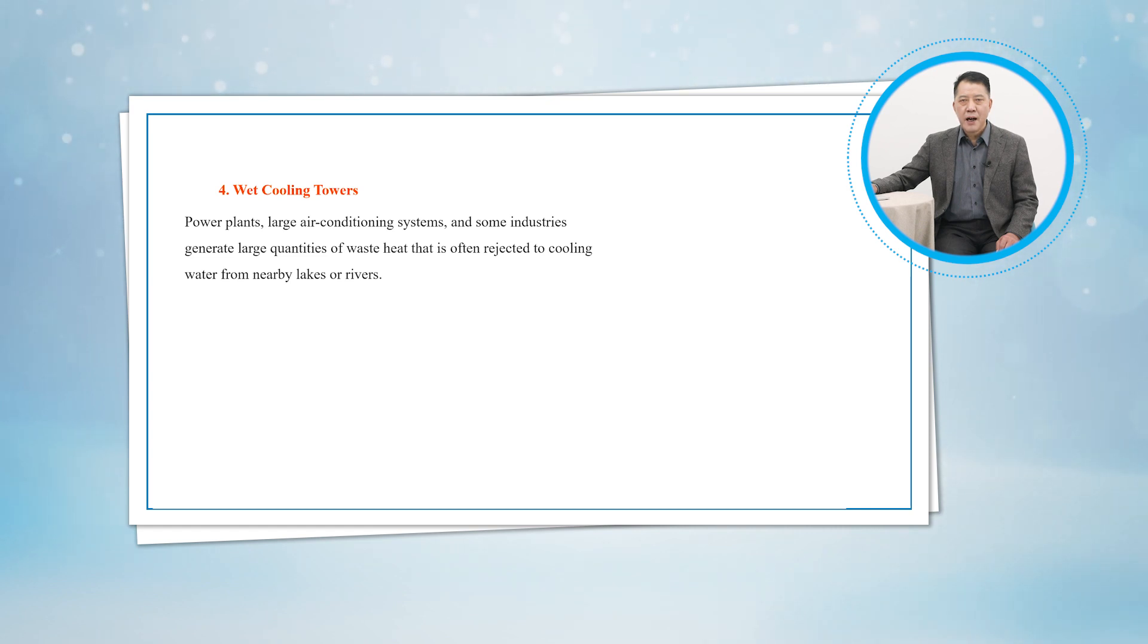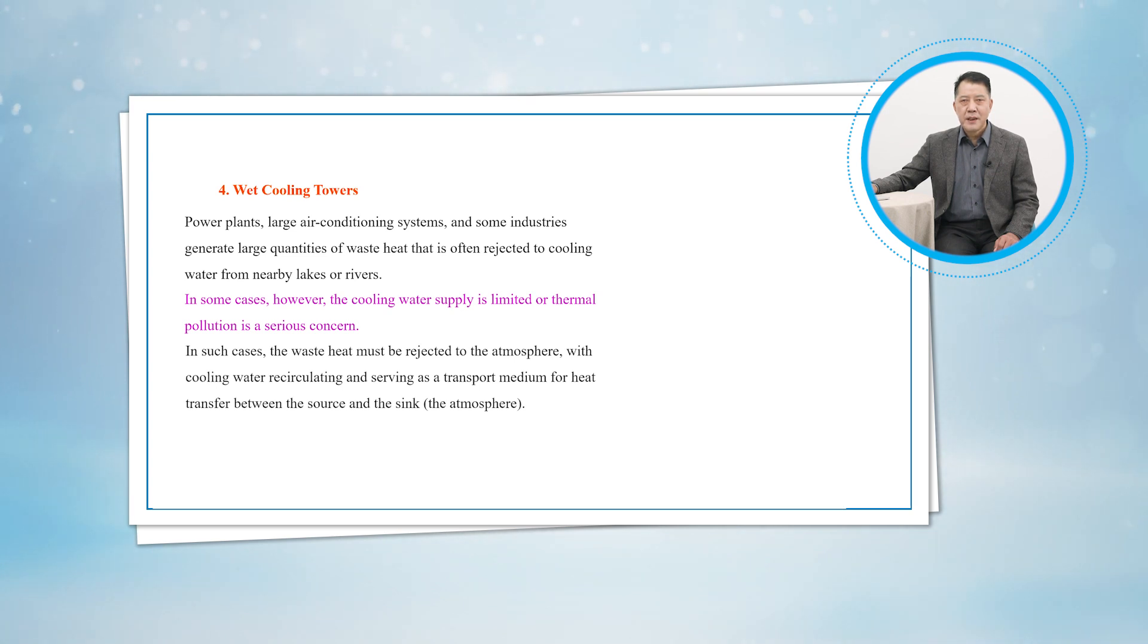Fourthly, let's talk about wet cooling towers. Power plants, large air conditioning systems, and some industries generate large quantities of waste heat that is often rejected to cooling water from nearby lakes or rivers. In some cases, however, the cooling water supply is limited, or thermal pollution is a serious concern. In such cases, the waste heat must be rejected to the atmosphere, with cooling water recirculating and serving as a transport medium for heat transfer between the source and the sink. One way of achieving this is through the use of wet cooling towers.